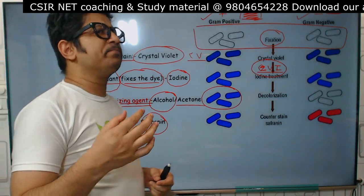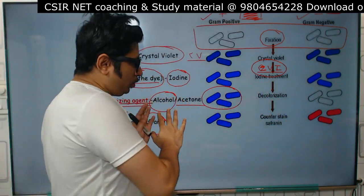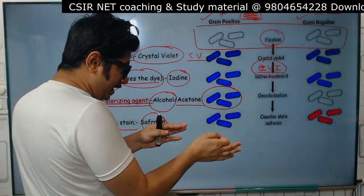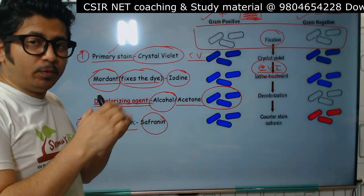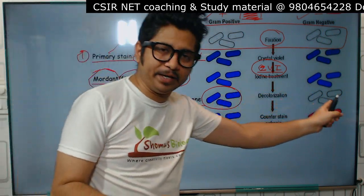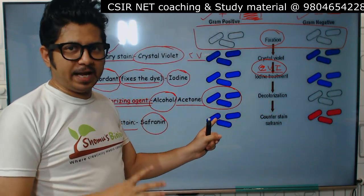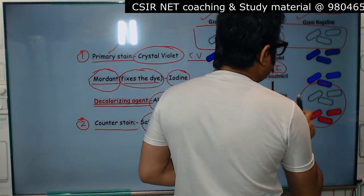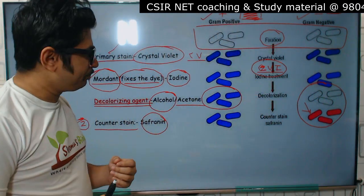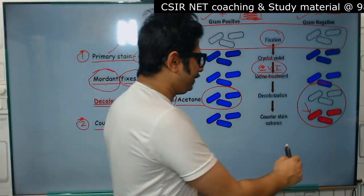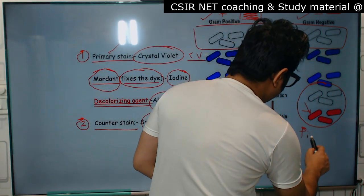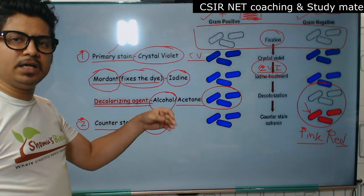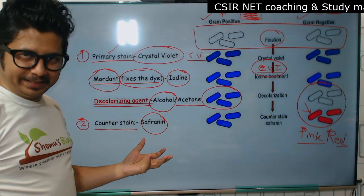Finally comes the counter stain or secondary stain, which is safranin. The color of safranin is pink to red. You apply safranin as the secondary stain. The gram negative bacteria, which are currently colorless, will absorb safranin. Gram positive bacteria already have the crystal violet color and will not take up safranin. As a result, gram negative bacteria will show a pink to red color while gram positive bacteria retain their blue-violet color.